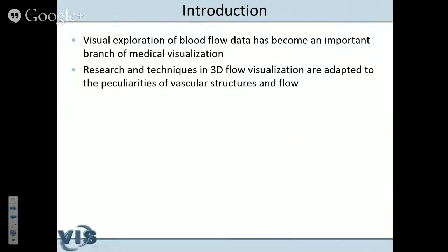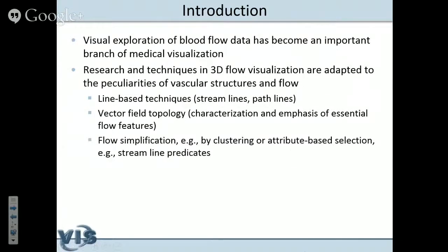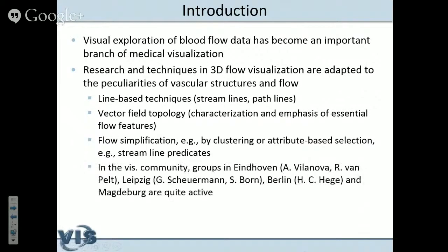We want to understand the morphology of vascular structures with their very complex shape and to see the flow inside. There are line-based techniques like streamlines for static data and pathlines for dynamic data. Topological structures are really important. There are many publications in medicine correlating certain patterns of the flow — embedded vortices, for example — with certain pathologies. Flow simplification is important because otherwise it is just too much data; flow may be simplified by clustering or attribute-based selection.